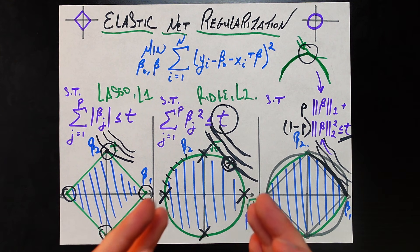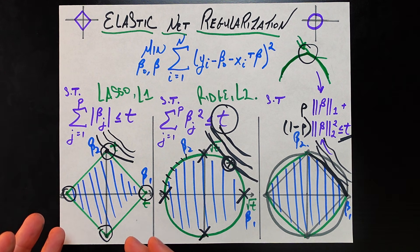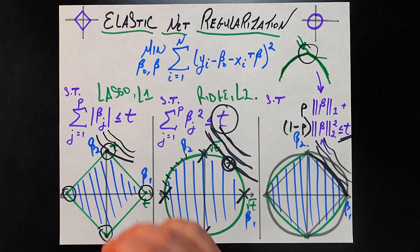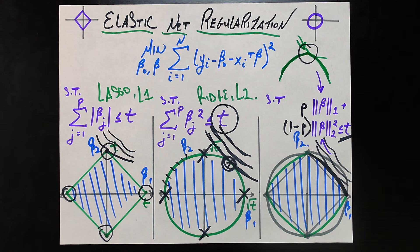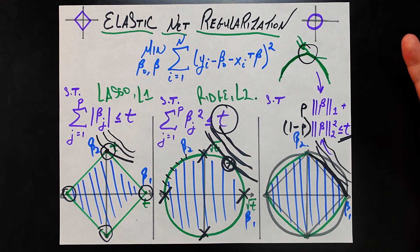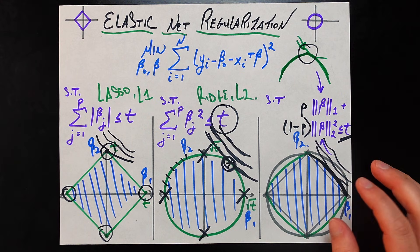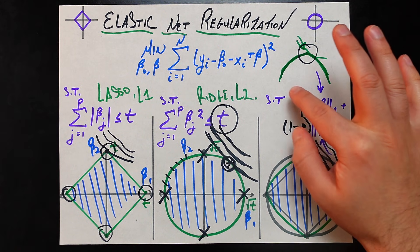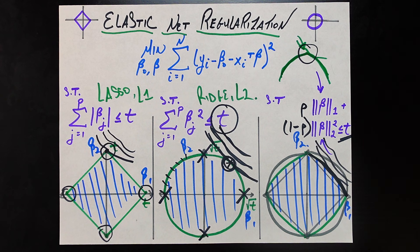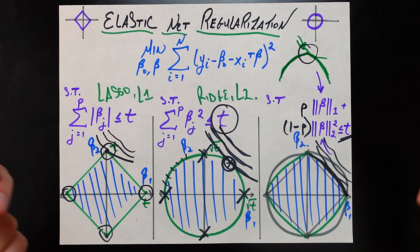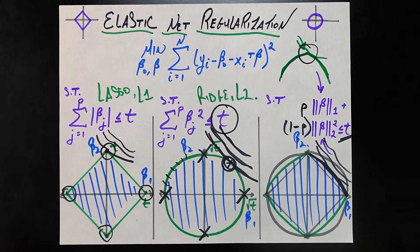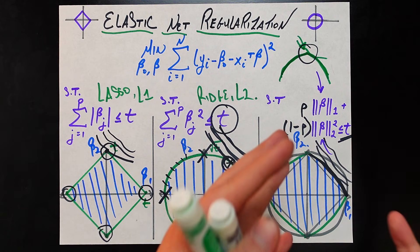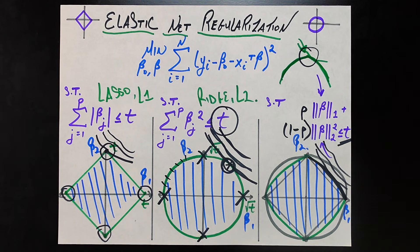So mathematically and geometrically, elastic net balances between lasso and ridge — still able to get the sparsity we like in lasso without succumbing to the collinearity issues that lasso has. It truly is the best of both worlds. The cost is added complexity: the constraint is not as clean as lasso or ridge, and the parameter rho also needs to be tuned. But that flexibility unlocks a whole set of problems that would otherwise be bogged down by the deficiencies of either lasso or ridge alone.